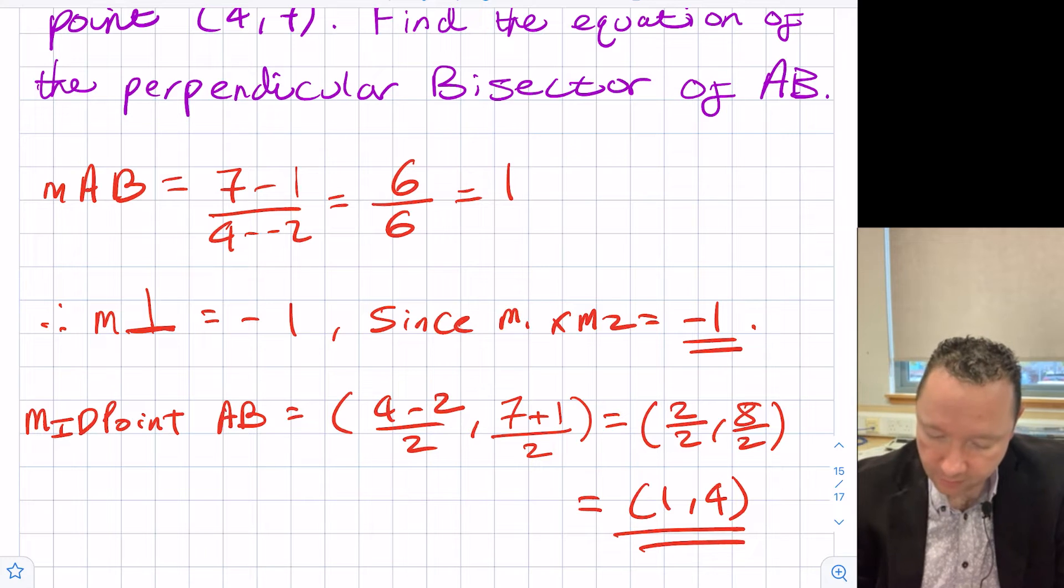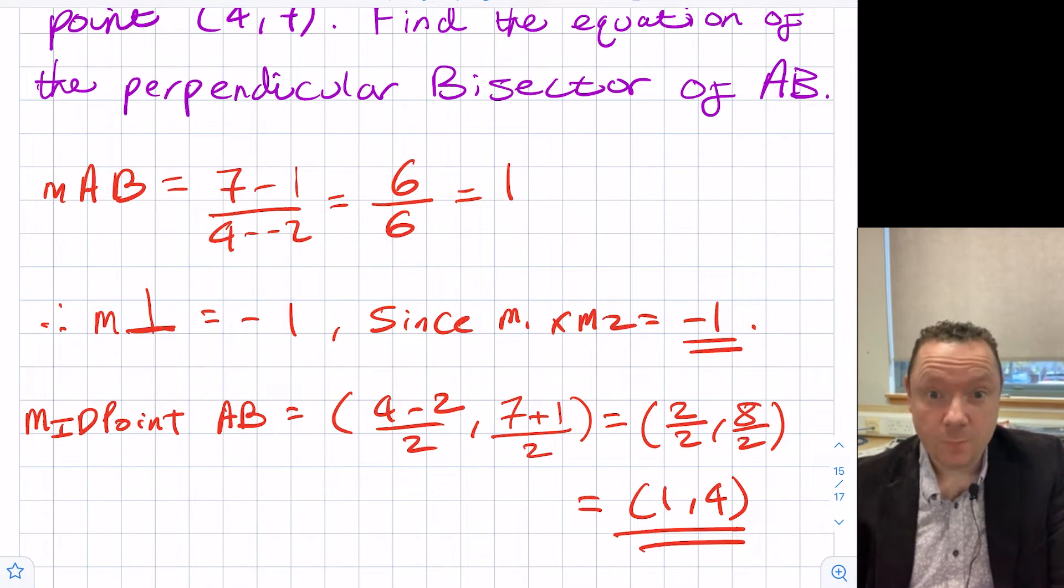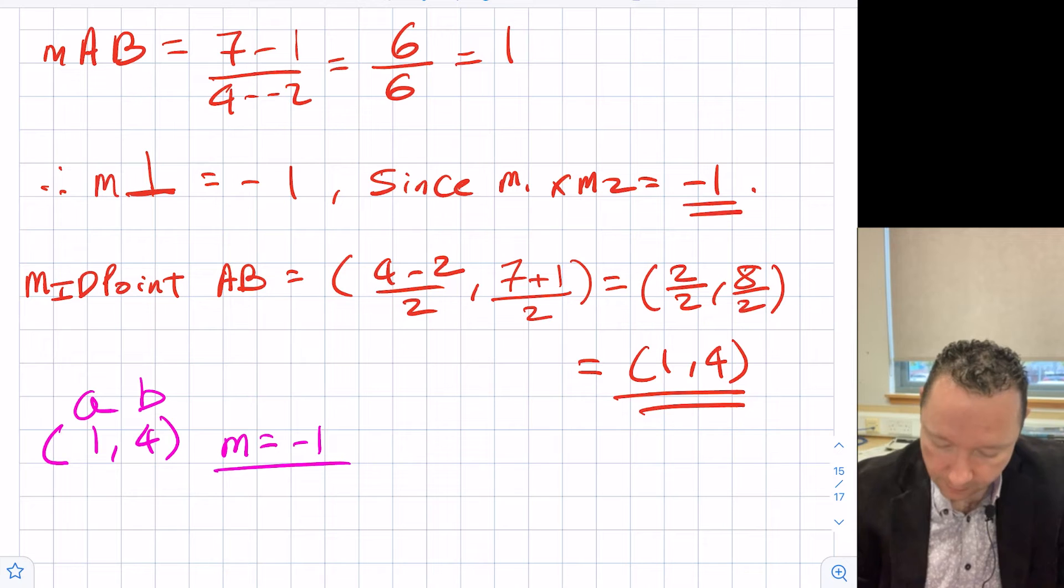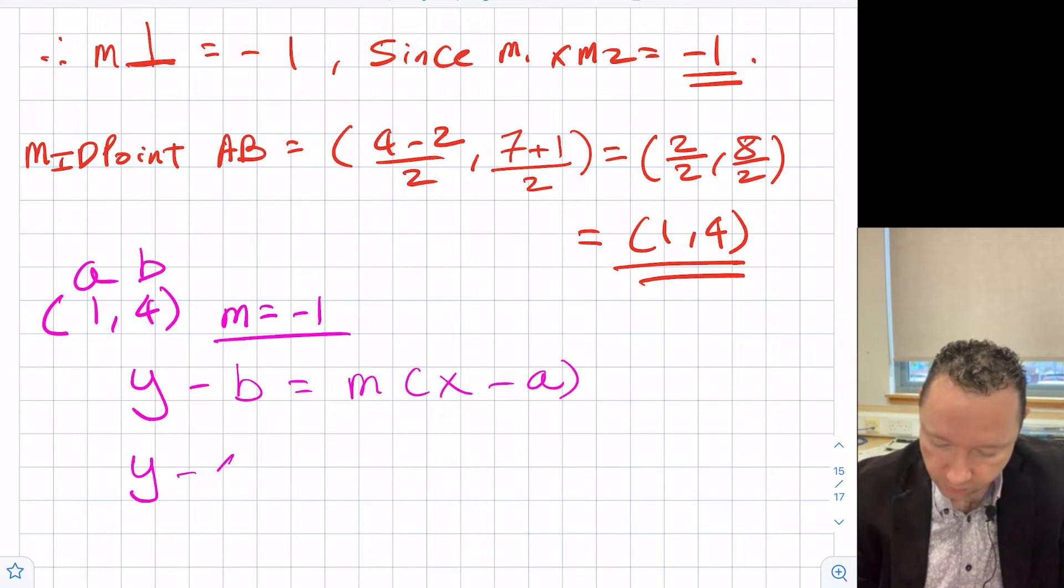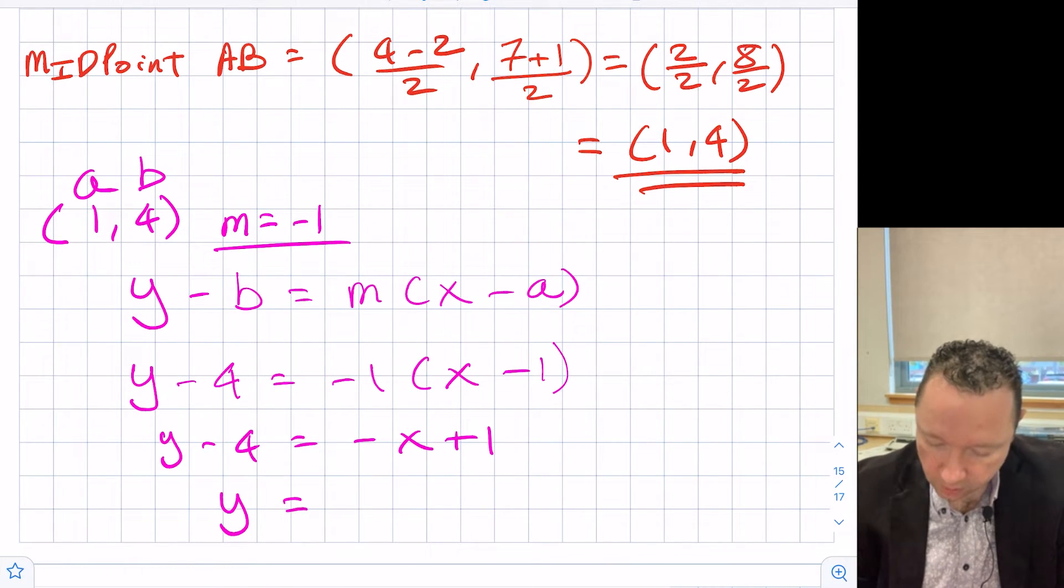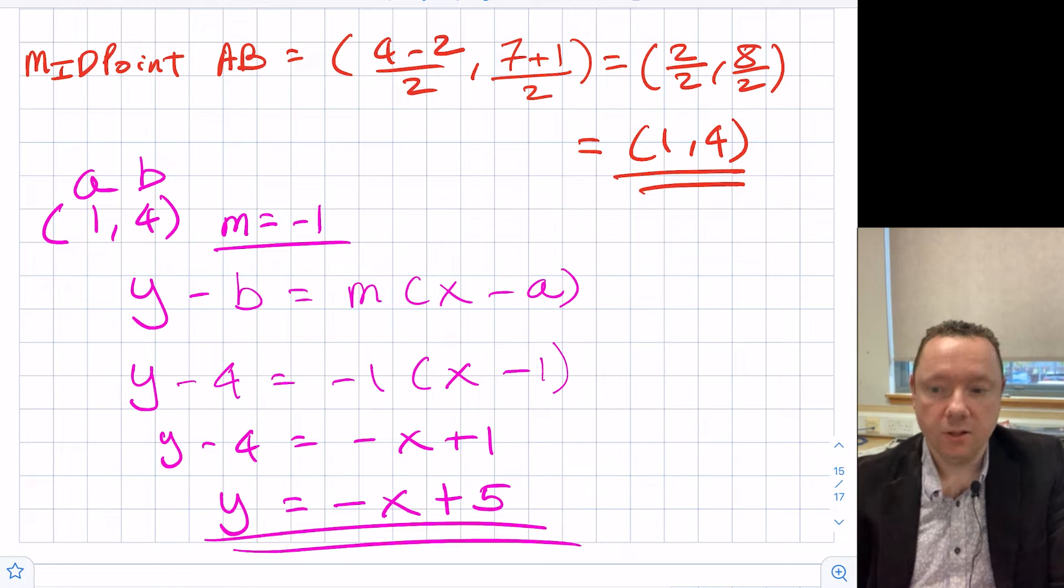We've got two bits of information that we need. We've got our gradient and we've got a point. If we've got a gradient and a point, we can always find the equation of a straight line using y minus b equals mx minus a. Our point is one, four and our gradient is equal to minus one. So y minus four equals minus one times x minus one. So y minus four is minus x plus one. Or to put it in a nicer way, y equals minus x plus five. There's the equation of our perpendicular bisector.